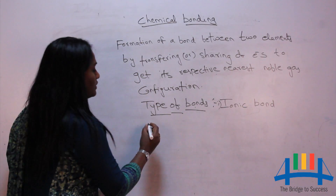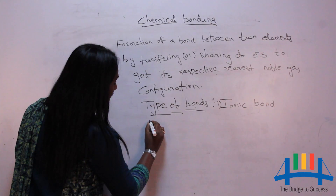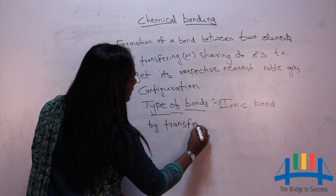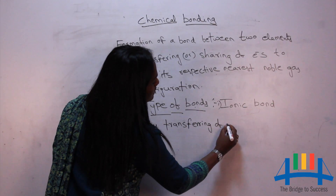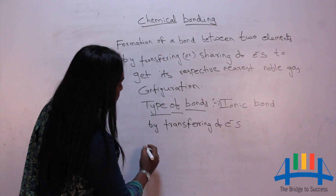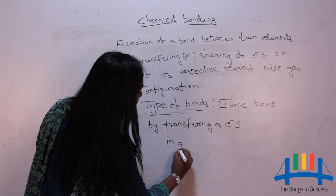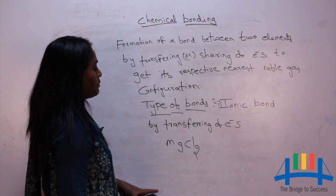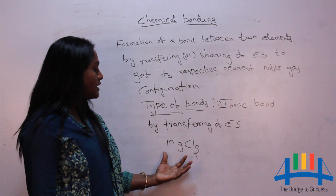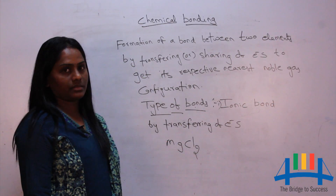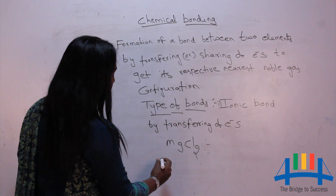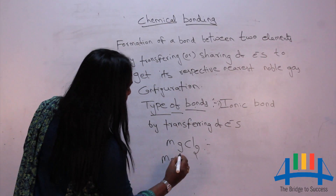Ionic bond is formed by transferring of electrons. Let's take an example: magnesium chloride (MgCl₂). It is a molecule — what type of bond is present between these two elements? Let's draw the Lewis dot structure of magnesium chloride.